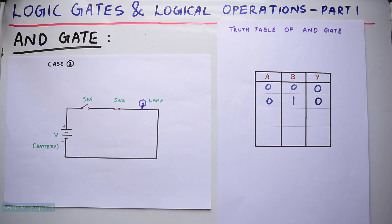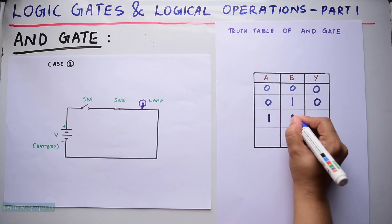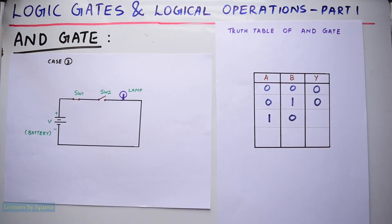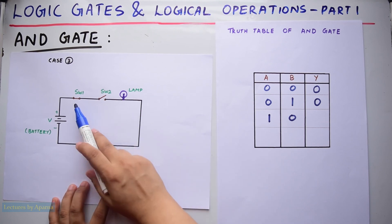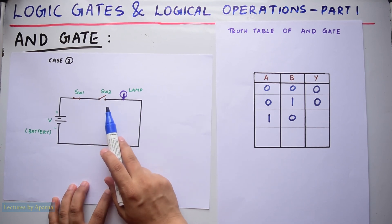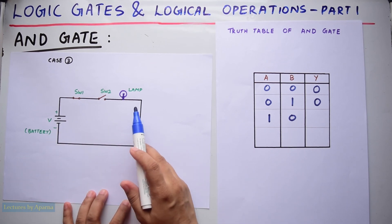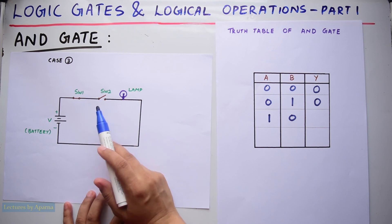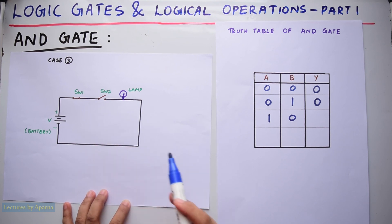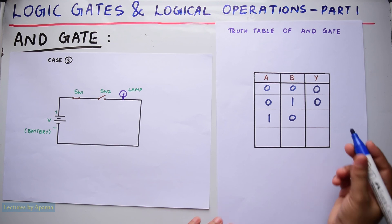Now consider the case when A equals 1 and B equals 0. This means switch 1 is ON and switch 2 is OFF. So the circuit will be like this. Here also the lamp will not be connected to the battery since switch 2 is OFF. So the lamp will be OFF, which means logic 0 at the output. Therefore Y will be equal to 0.